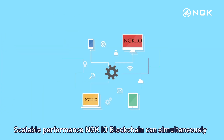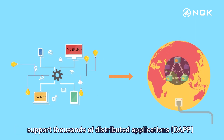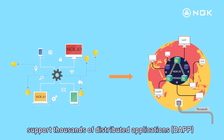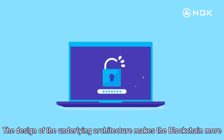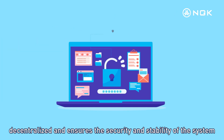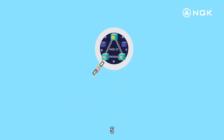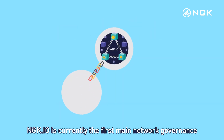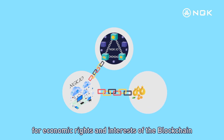Third, scalable performance — NGK.IO blockchain can simultaneously support thousands of distributed applications. Fourth, the design of the underlying architecture makes the blockchain more decentralized and ensures the security and stability of the system.